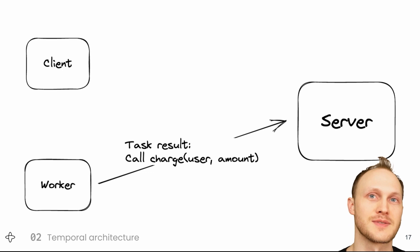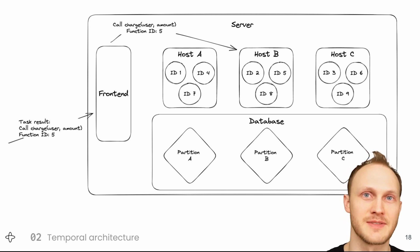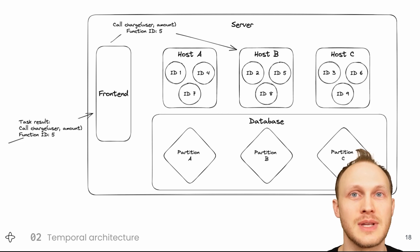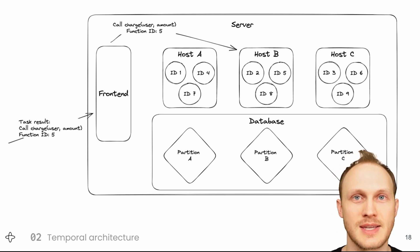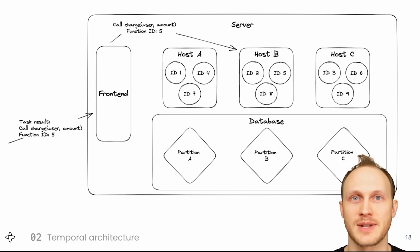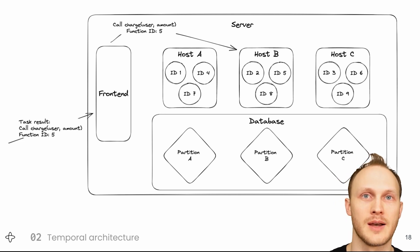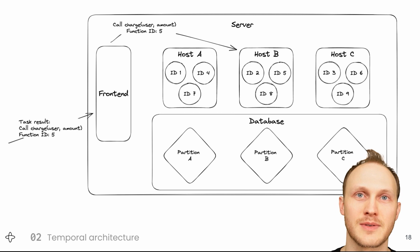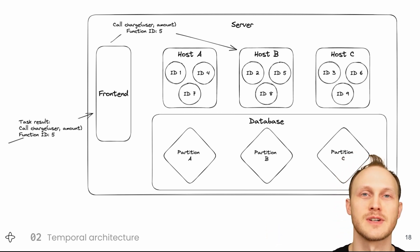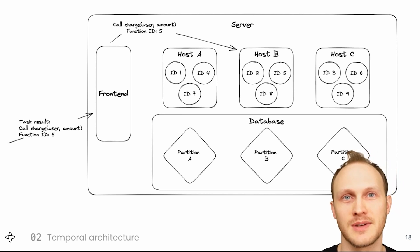Now let's look inside the server to see how it handles receiving the next step. Inside the server component are a few different services and a couple of data stores. The front end service receives the next step from the worker, along with the ID of this instance of the subscription function. Each instance has an ID that is unique among all running functions, provided by the client at start time. We hash the ID to determine which host the function belongs to — in this case, function ID 5 belongs to host B, so that's where the front end service forwards the request. Each host has a database partition or shard. We support MySQL, Postgres, SQLite, and Cassandra, but it's a very write-heavy load since each step of each function you run is written to the database, and you can scale that write load much higher with Cassandra, so we use Cassandra for our cloud service.